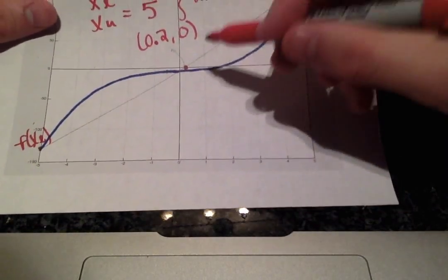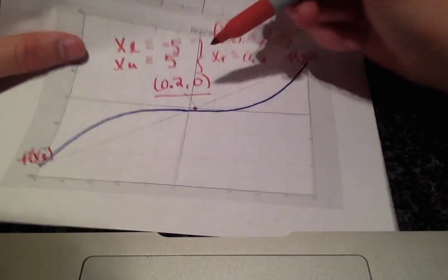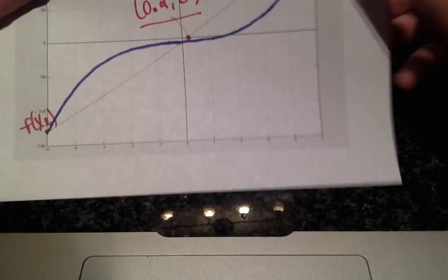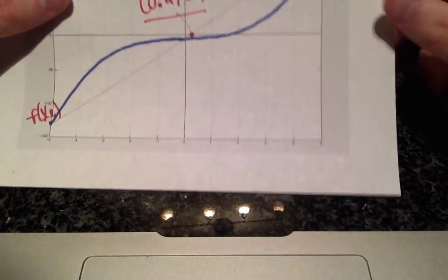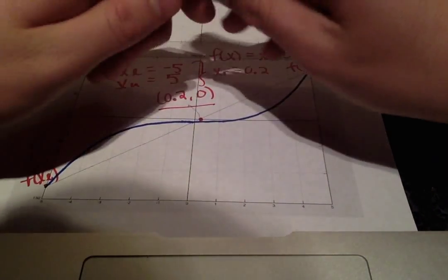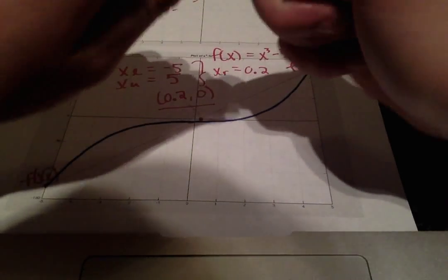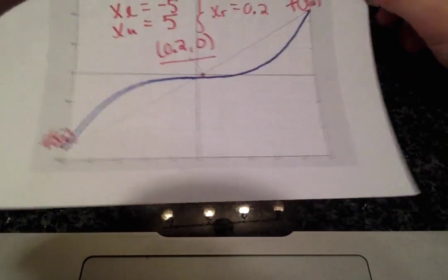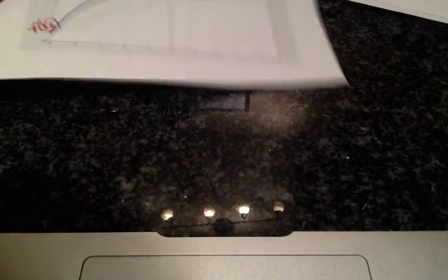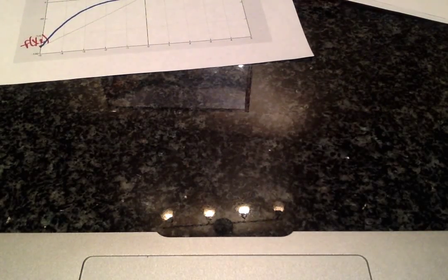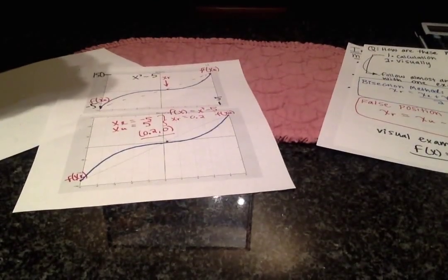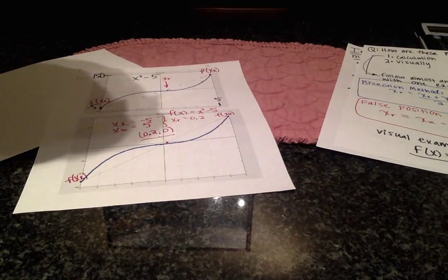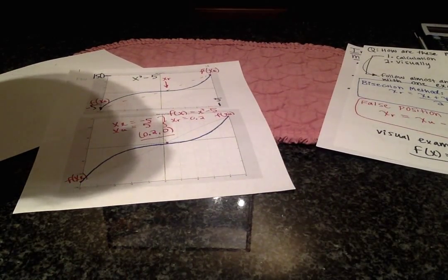And as you can see from our graph, that point right there, 0.20, is right there. Alright, hopefully you'll join us in the next video and we'll probably do another example with the false position method and actually do the crunching of the numbers. Alright, once again, thanks for watching. Hope this helped.